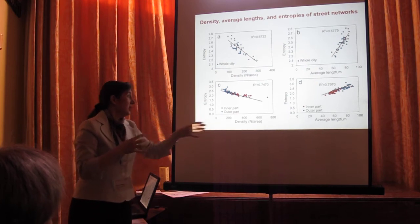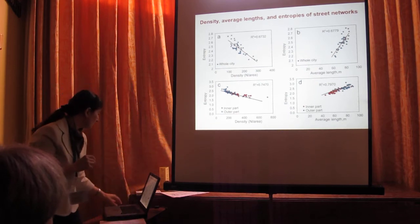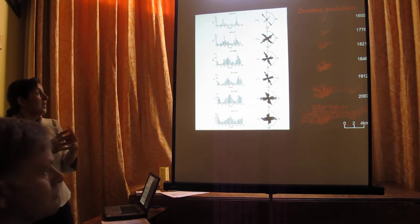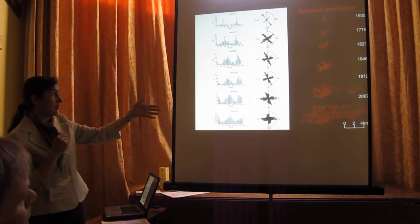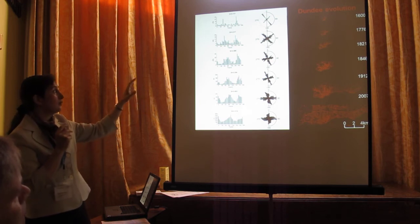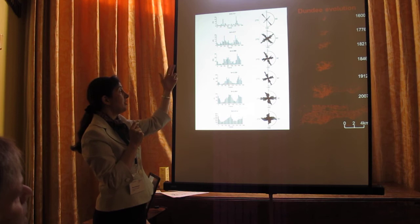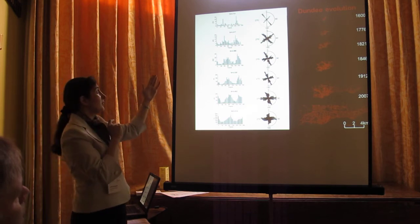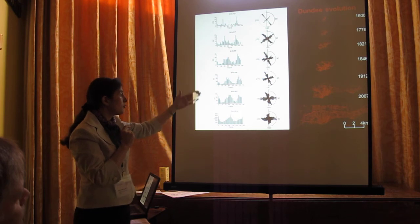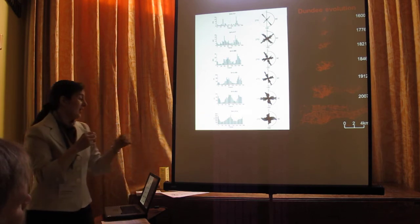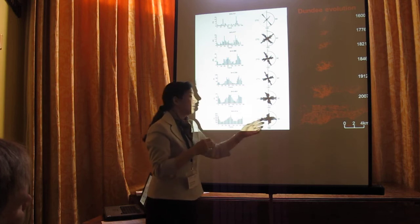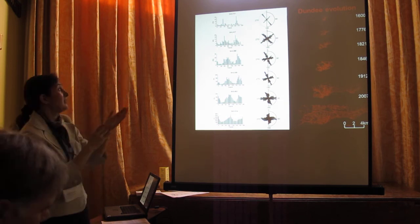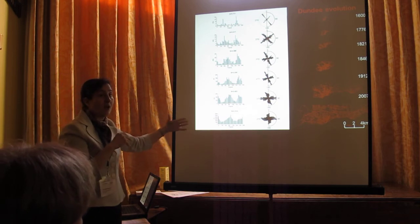Similar results were found when comparing the inner and outer parts of cities. Looking at street orientation as a function of time, I had access to historical data for Dundee. The initial street network shows an orthogonal trend in the rose diagram. As the city evolved, the rose diagram showed more variation in street orientation, and for the current time, a more circular distribution. The calculated entropy for orientation is lower for the orthogonal trend and higher for the current situation.